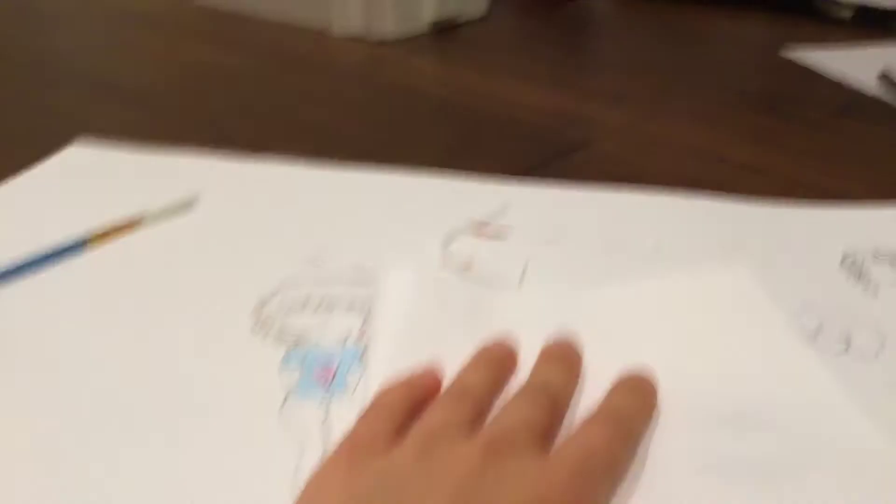You can kind of move the strings around in the paper and just pull them out. Keep pulling until the string is all out. Sorry, my hand doesn't fit in the frame anymore. And then just pull it all out.